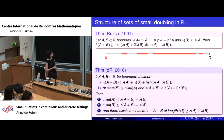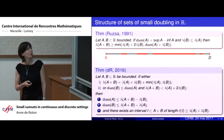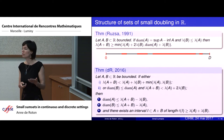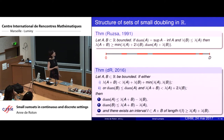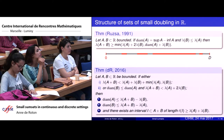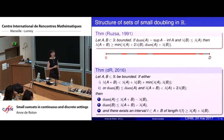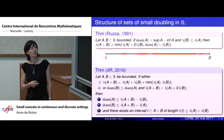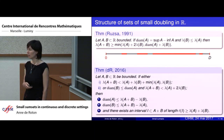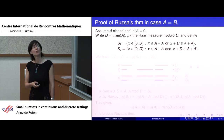Last year I proved a theorem mostly based on Ruzsa's work — a continuous analog of the 3k minus 4 theorem by Freiman. With A equal to B, if lambda of A plus A is strictly less than three times lambda of A, then A is included in an interval of size at most lambda of A plus A minus lambda of A. And the new result not previously known: there exists an interval included in A plus B of size at least lambda of A plus lambda of B.